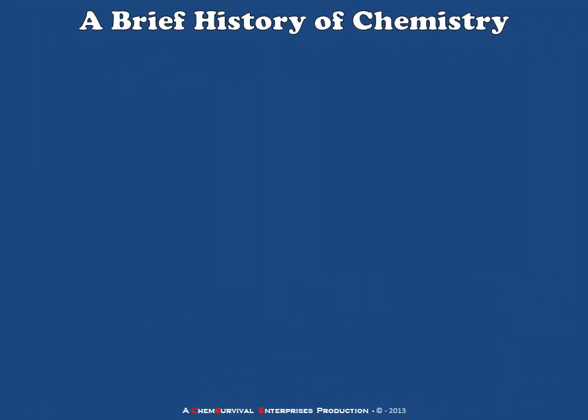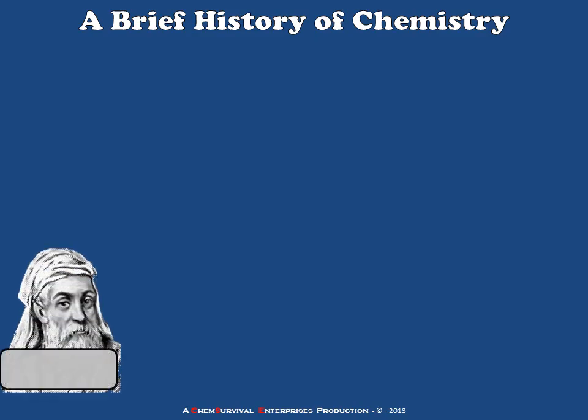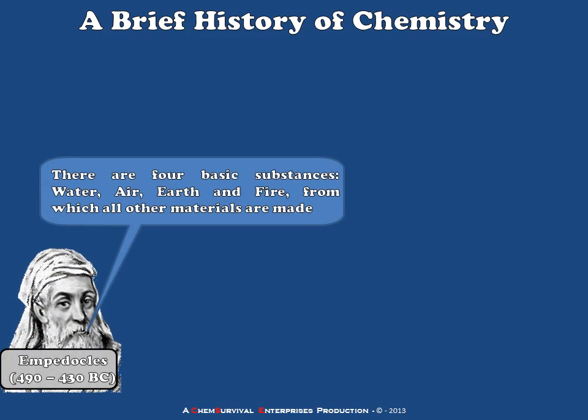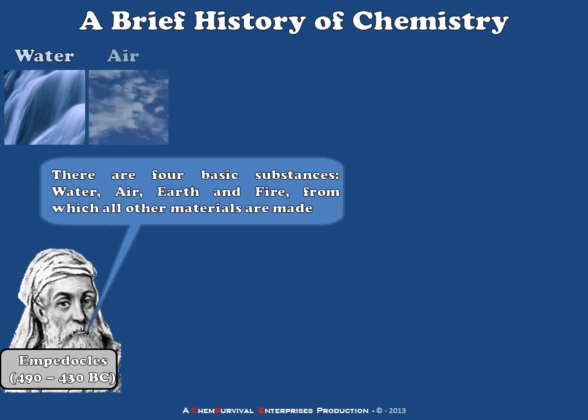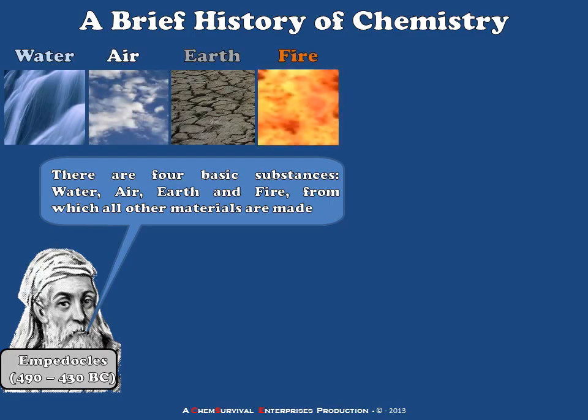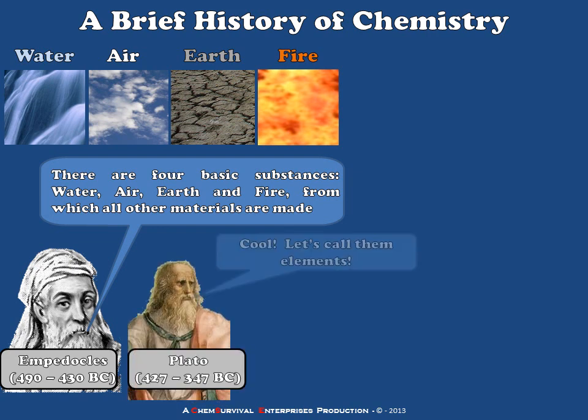I'd like to start by discussing a Greek philosopher named Empedocles. He's credited with being the first Western philosopher to suggest that there were four basic substances from which all other substances are created by mixing them together. The four basic substances Empedocles chose were water, air, earth, and fire. Not long after Empedocles came the famous Greek philosopher Plato, who is generally attributed with coining the term 'Elements.'